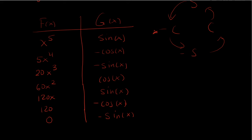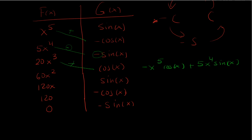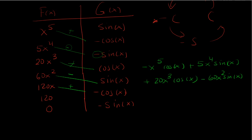Now we look at the diagonals and multiply them. The first diagonal gives negative x⁵ times cosine x. The next diagonal is minus, but combined with the negative already present, two negatives make a positive: plus 5x⁴ times sine x. The next diagonal is plus: 20x³ times cosine x. Then minus: negative 60x² sine x. Then plus combined with a negative gives minus 120x cosine x. Finally, two minuses make a positive: plus 120 sine x.